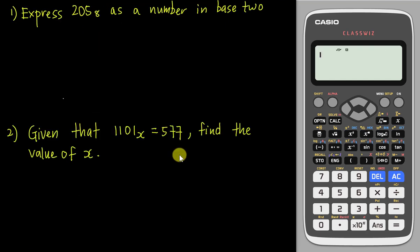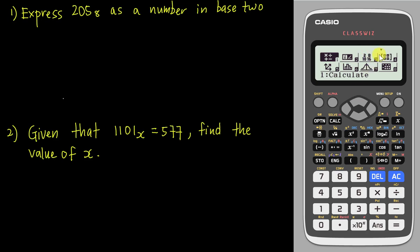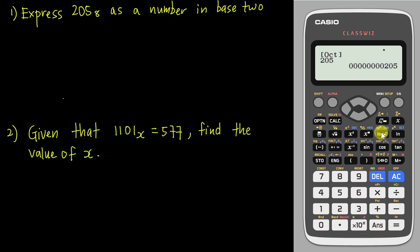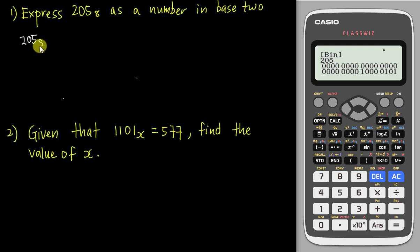Let's look at some exam-like questions. Question 1: Express 205 base 8 as a number in base 2. Since this only comes out in Paper 1, you can use the calculator directly. Go to Menu, select number 3 (Base N), then select OCT. Key in 205, press Enter, then change to BIN. The answer is 10000101 base 2.